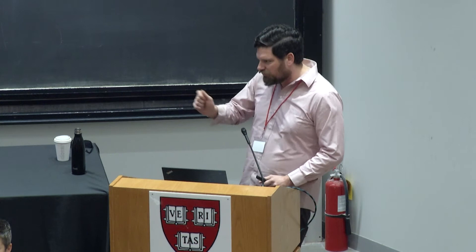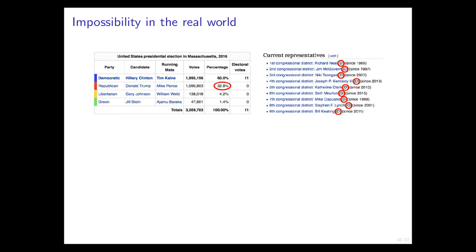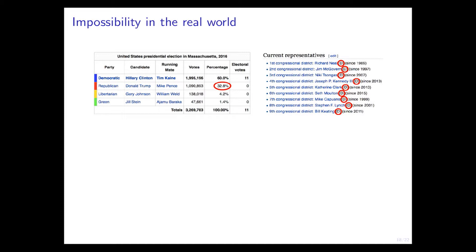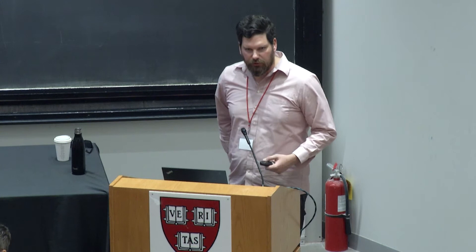This is more than just an abstraction. In this state — Massachusetts — 30% of the vote is Republican, and if you look at the congressional districts, they're all taken by Democrats. I'm not claiming that Massachusetts is gerrymandered. I'm claiming that there's more to the story: there's some political geography you have to look at to understand what's going on. It's subtle.